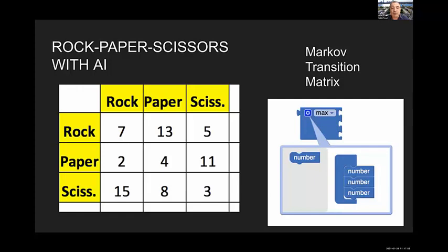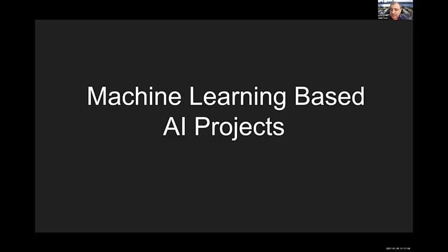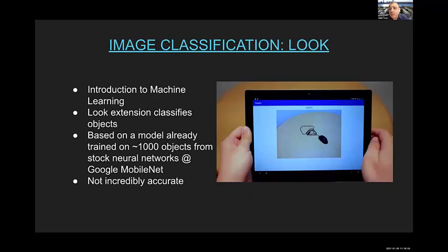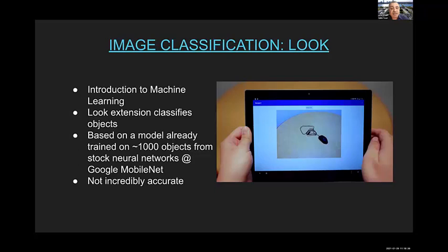For machine learning-based AI projects, the first is image classification with the Look extension — our introduction to machine learning. The extension classifies objects: you hold your mobile device toward an object like a pencil or bottle and it identifies and reports what it is. It's based on a model pre-trained on a thousand objects from Google's MobileNet. It's not terribly accurate — if it encounters an object it hasn't seen before, it gives a wrong answer — but this introduces the concept of bias in AI.